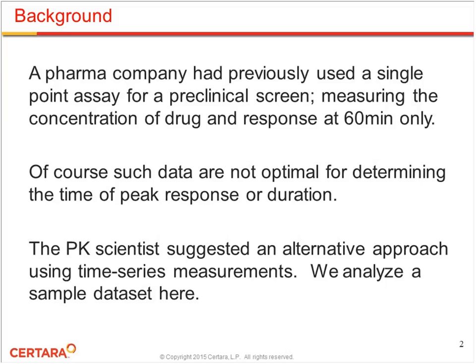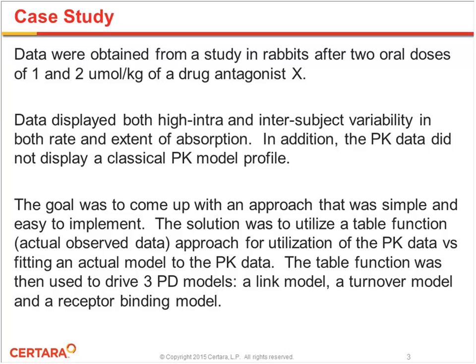This particular study was run in rabbits. Here we're looking at data from a single rabbit that received two oral doses of a drug — one and two micromole per kilogram — on two different occasions. If you look at the data across all rabbits, there's very high intra and inter-subject variability, both in rate and extent of absorption. The PK data did not display a classical PK model profile. Because we're really focusing on how to use PML to define the mechanistic models, we're just going to focus on data from one rabbit.